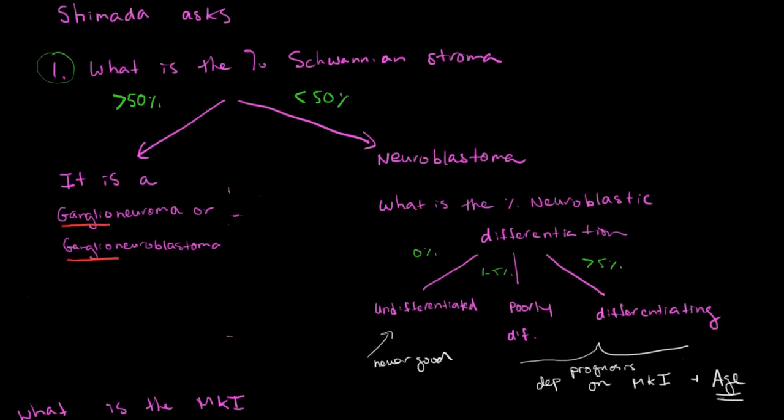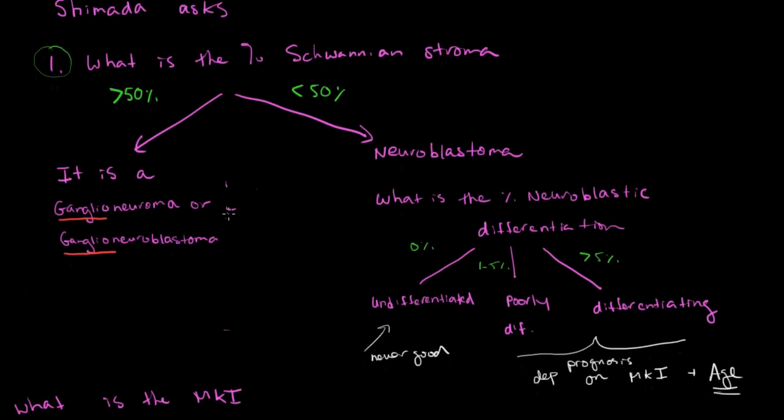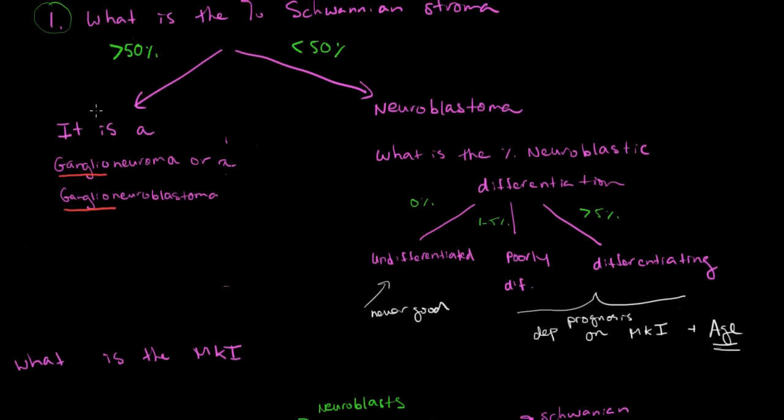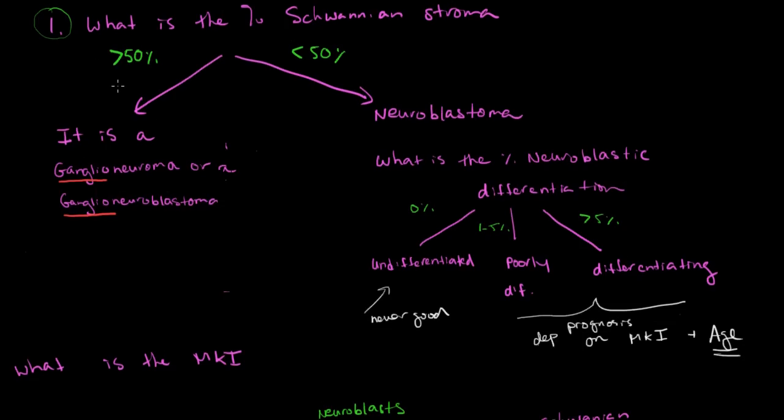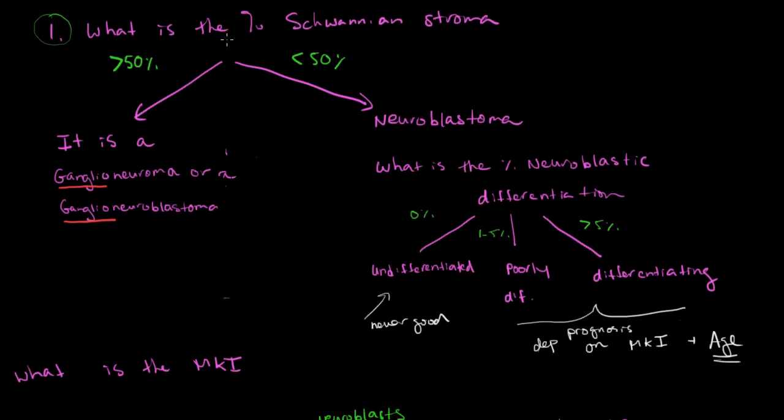So basically, in looking at a neuroblastoma, a standard pathologist looking at a neuroblastoma basically asked Dr. Shimada's questions. And the questions are, how differentiated is this tumor? And then that's integrated with the age of the patient. So basically, the first question that we ask, and this is based on the work of Dr. Shimada, is, what is the percent of Schwannian stroma? So that's the first question, the most important question. What is the percent of Schwannian stroma?